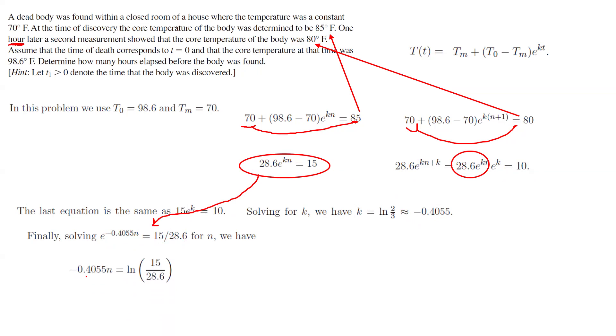It means that negative 0.4055n is equal to ln of 15 divided by 28.6. Take the ln of both sides to get rid of this exponential function. Now, solving for n, n is about 1.6. After 1.6 hours elapsed before the body was found.